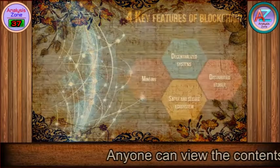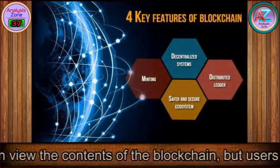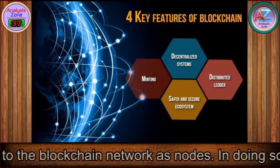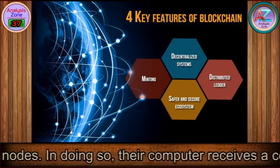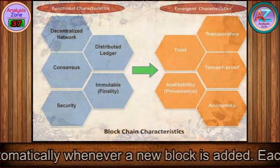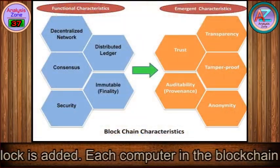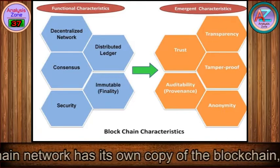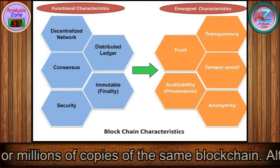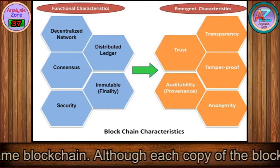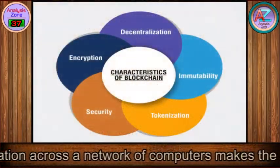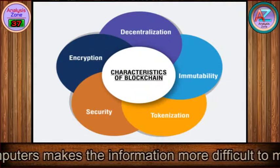Anyone can view the contents of the blockchain, but users can also opt to connect their computers to the blockchain network as nodes. In doing so, their computer receives a copy of the blockchain that is updated automatically whenever a new block is added. Each computer in the blockchain network has its own copy of the blockchain, meaning there are thousands or millions of identical copies.